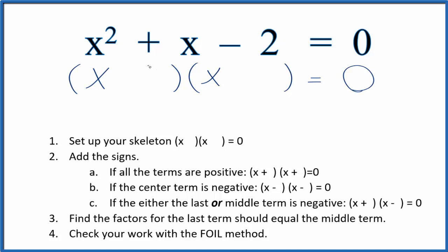Now we can add the signs in our skeleton equation. We look up here, we have a positive and a negative. So if either the last term or the middle term is negative, we'll use this format here. Let's put a positive here and a negative here.